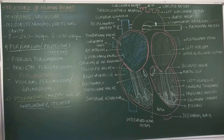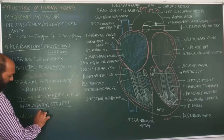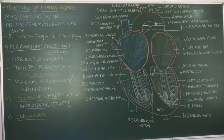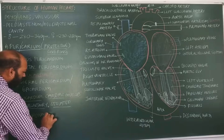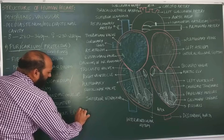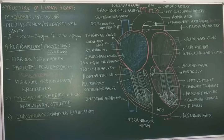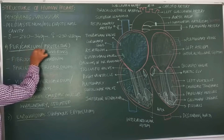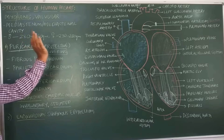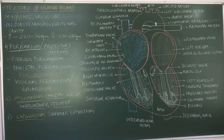The third and innermost layer is called the endocardium. This endocardium is made up of simple squamous epithelial cells. So these are the three layers: pericardium as the outermost protective layer, myocardium as the middle muscular layer, and endocardium as the innermost layer.